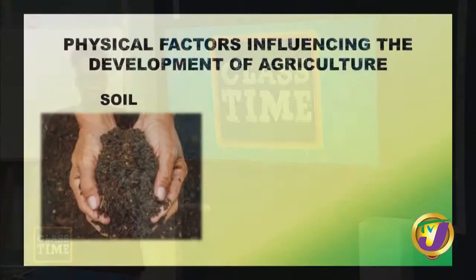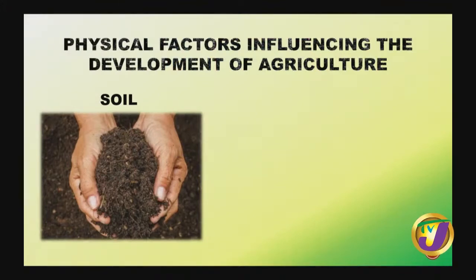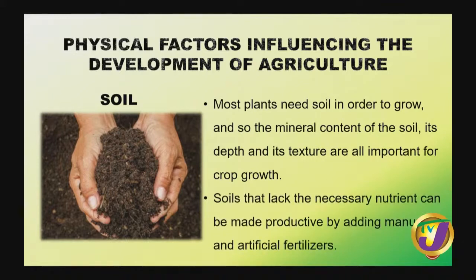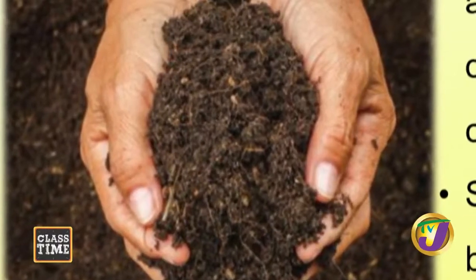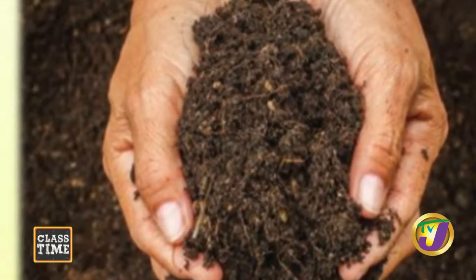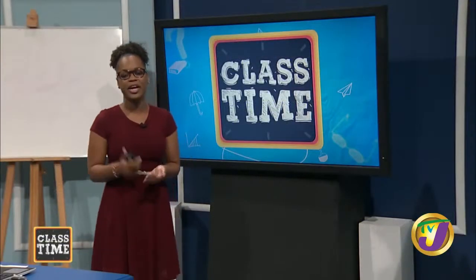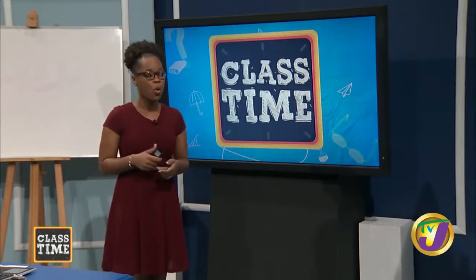Soil is another factor. For agriculture, the soil must be properly aerated, fertile, and have the right amount of nutrients — mineral content and texture are important. Without these qualities, the soil is infertile and yields will be very poor. If soil lacks necessary nutrients, farmlands are given artificial fertilizers, or in the case of subsistence farming, manure from animals on the same plot. Practices such as crop rotation also improve soil quality.